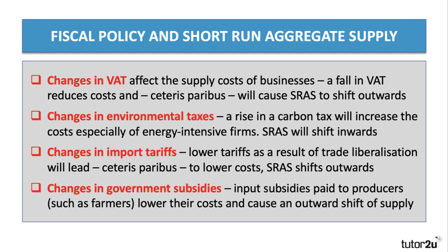One would be things like changes in VAT — value-added tax — a tax on suppliers. If VAT, currently 20%, was to be reduced — for example, the government reduced VAT for travel and hospitality businesses during the pandemic — cutting VAT reduces their costs and will cause aggregate supply to shift outwards. On the other hand, the government might introduce higher taxes, such as a carbon tax or lifting the carbon price floor in a carbon trading scheme. Higher environmental taxes will place increased costs on businesses, especially those that are energy-intensive. As a result, short-run supply will shift inwards.